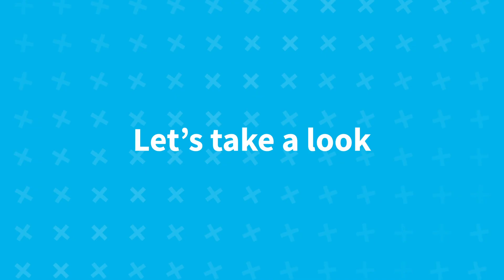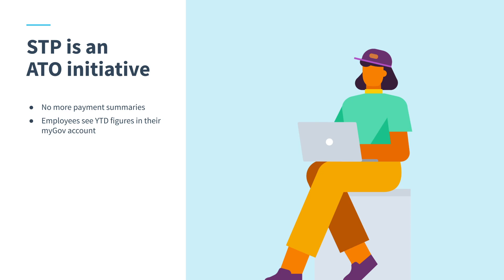Now that you've seen the filing process in action, let's step back and look at what STP actually is. STP is an ATO initiative. What it means for a business is that pay run information like wages and salaries, PAYG and superannuation all need to be reported to the ATO on or before the payment date of each pay period using an online payroll system. Previously this type of information was only reported at the end of the financial year in the form of payment summaries, so the good news is you no longer have to do these. Employees can now see their year-to-date filings in their myGov account at any time during the year.